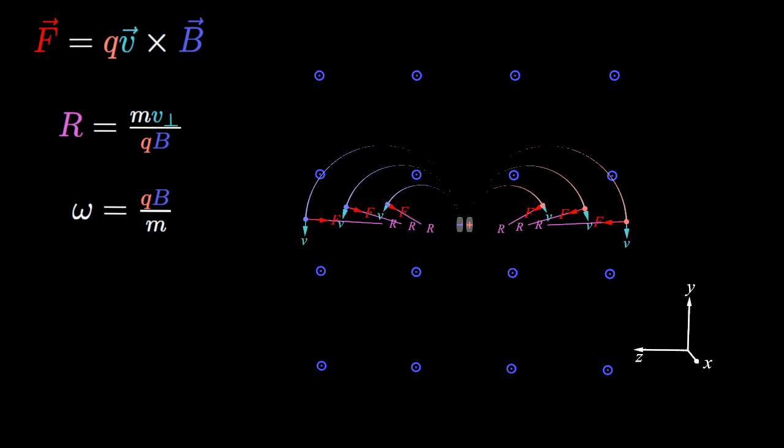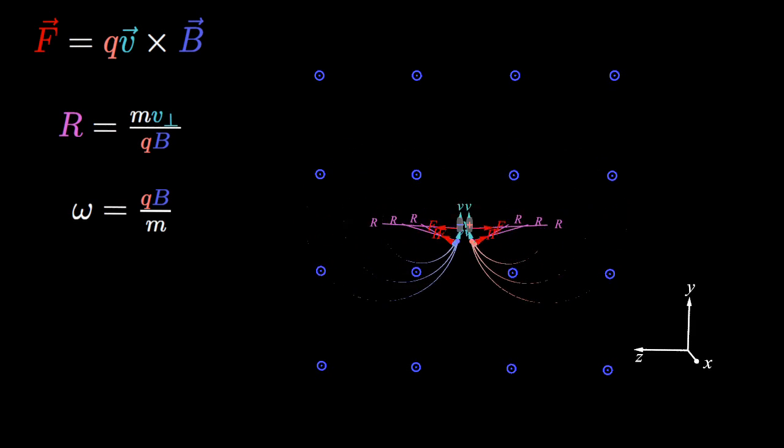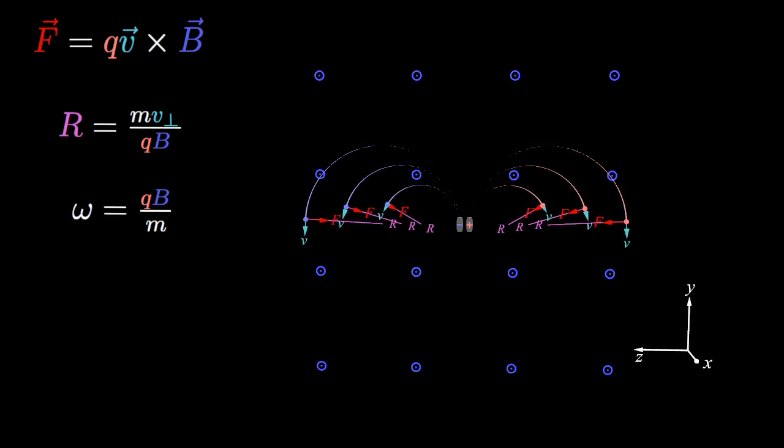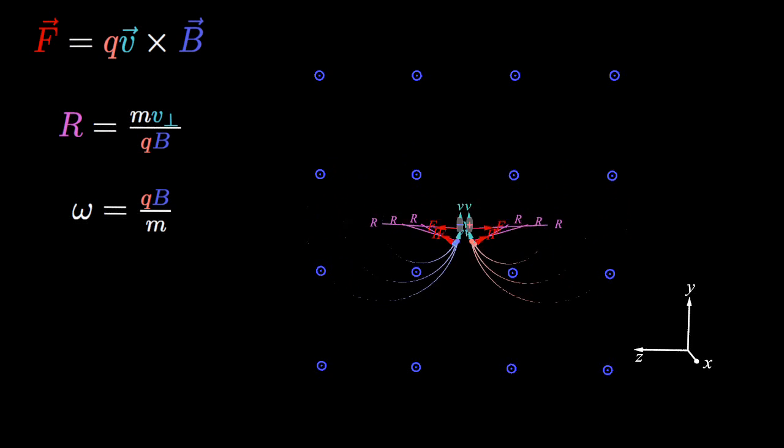Speed also affects the radius of the circular motion. However, the time it takes is not affected by the speed. The frequency of the orbits only depends upon the charge, the magnetic field strength, and the charge's mass.